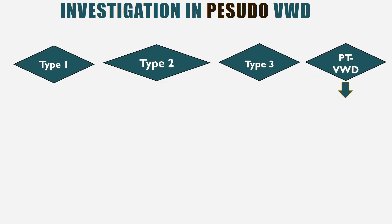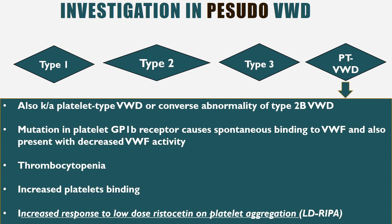There is also a variant called pseudo von Willebrand disease, also known as platelet-type von Willebrand disease, which is the converse abnormality of type 2b. In type 2b, there is a gain-of-function mutation in the platelet binding site of vWF, whereas in pseudo vWD there is a mutation in platelet glycoprotein 1b receptor, causing spontaneous binding to vWF. The patient presents with decreased vWF activity, thrombocytopenia, increased platelet binding, and increased response to low-dose ristocetin on platelet aggregation — so the LD-RIPA test is specific for both type 2b and pseudo vWD.